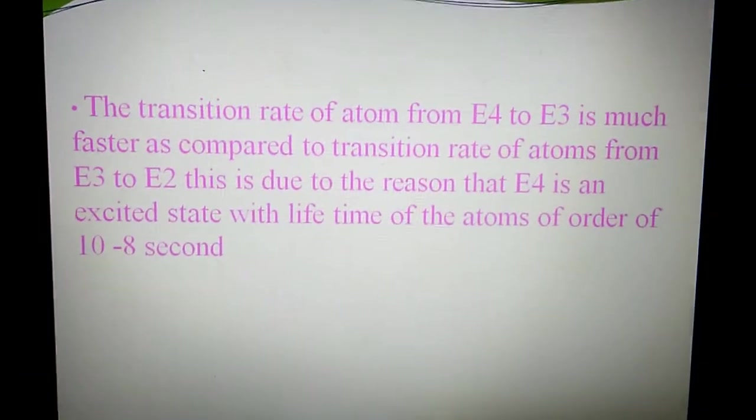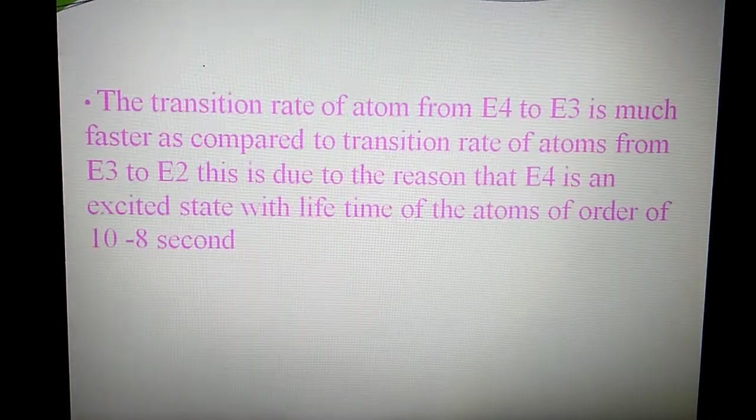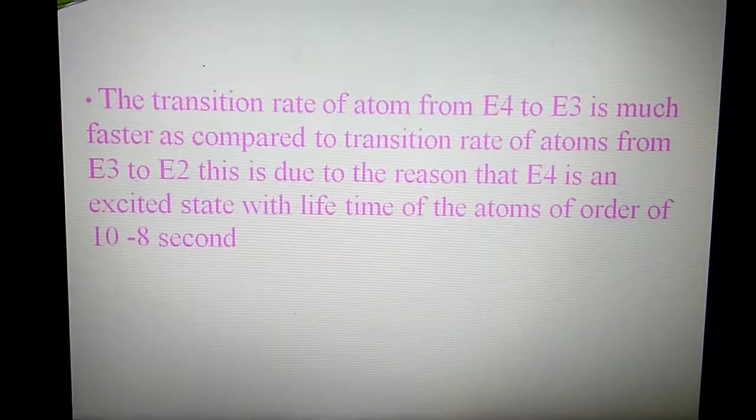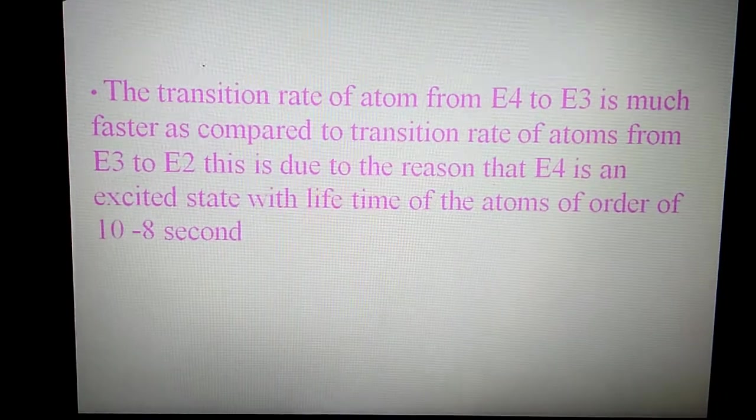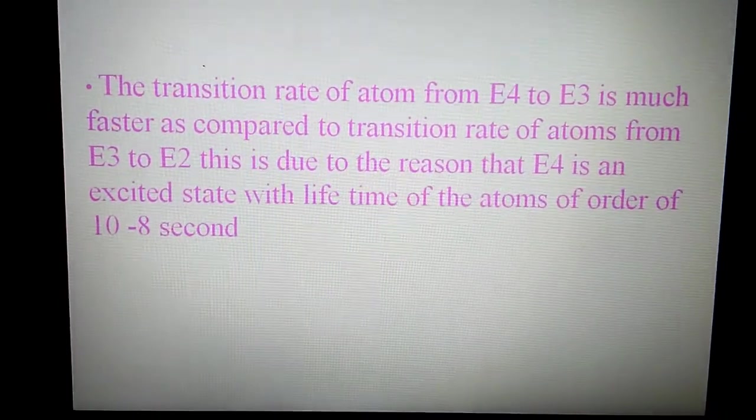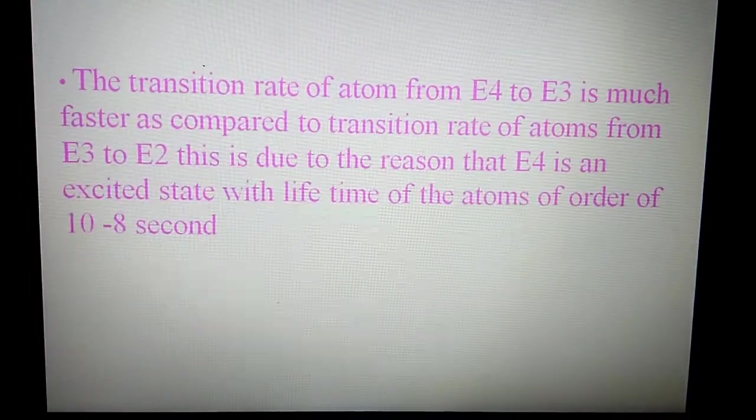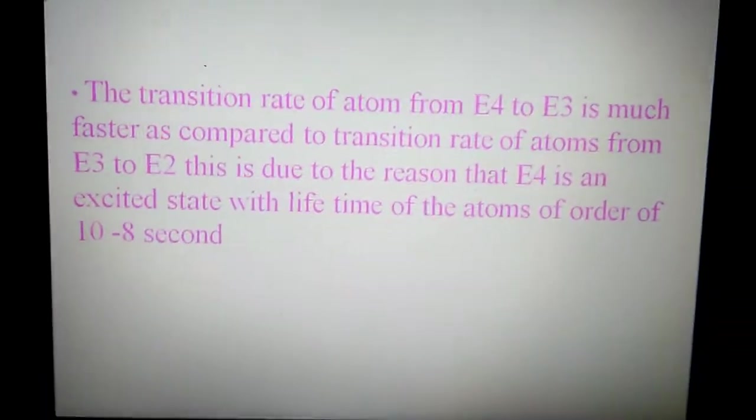The transition rate of atoms from E4 to E3 is much faster as compared to transition rate of atoms from E3 to E2. This is due to the reason that E4 is an excited state with lifetime of order of 10 to the power minus 8 seconds.